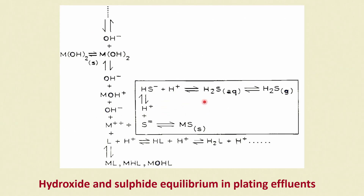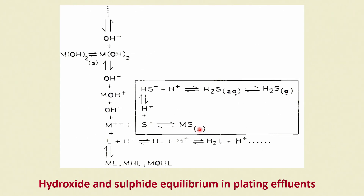In the equilibrium diagram: H₂S gas in aqueous medium is in equilibrium with H₂S(aq), which equilibrates to HS⁻ and H⁺. HS⁻ can further give H⁺ and S²⁻. If metal ions are present, the sulphide ions combine with the metal to form sulphide solids which can be filtered and removed.